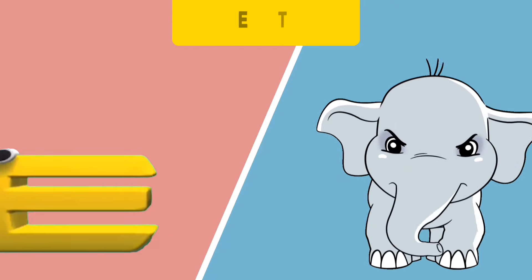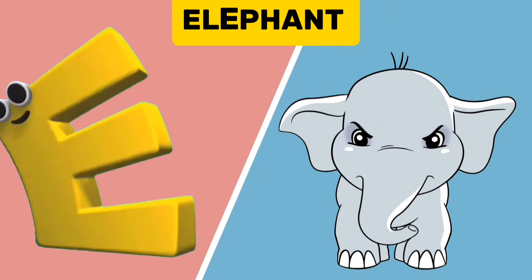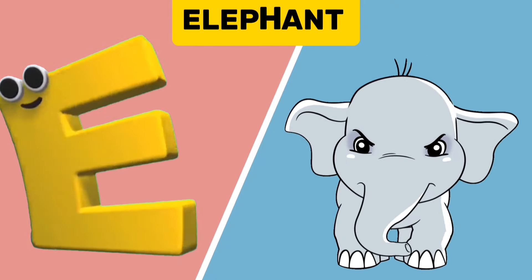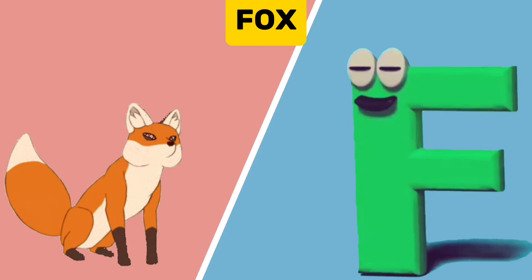D, D. E is for Elephant. E, E. Elephant. F is for Fox.